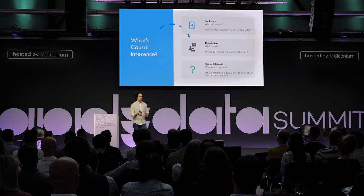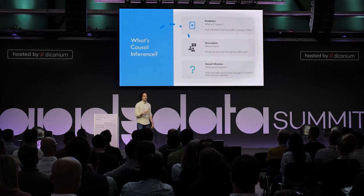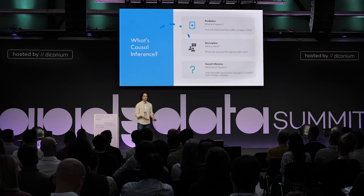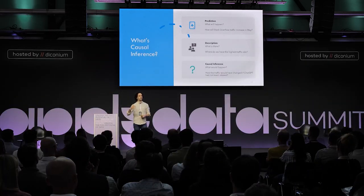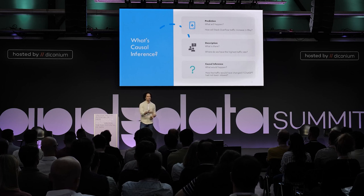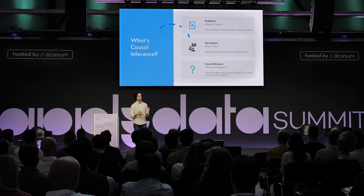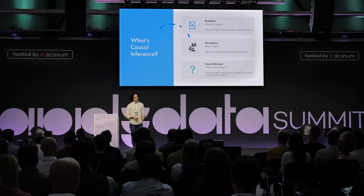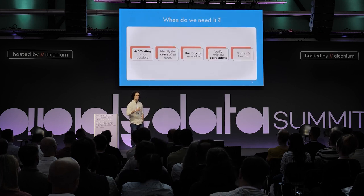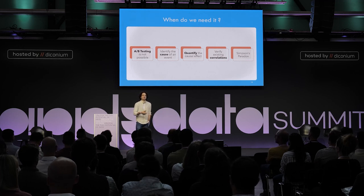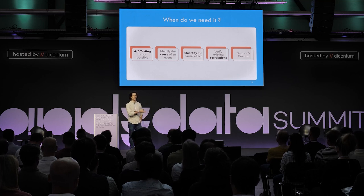What's causal inference? I remember a nice talk from PyData some years ago where someone described causal inference as the third stage of data. What we do is: prediction — 'what will happen?' — and description — 'what is there, where do we have the highest traffic?' Then there is causal inference, which asks 'what would happen?' For example: how would traffic have changed if ChatGPT had not been released? Causal inference is especially needed when A/B testing is not possible, when we want to identify the cause of an event, or when we want to verify existing correlations.